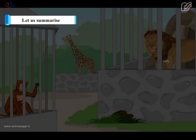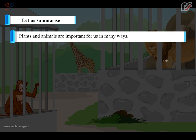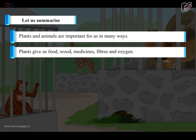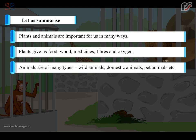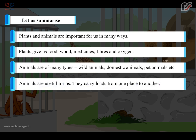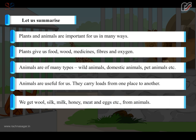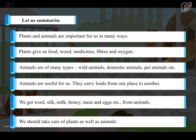Let us summarize. Plants and animals are important for us in many ways. Plants give us food, wood, medicines, fibers and oxygen. Animals are of many types: wild animals, domestic animals, pet animals, etc. Animals are useful for us. They carry loads from one place to another. We get wool, silk, milk, honey, meat and eggs from animals. We should take care of plants as well as animals.